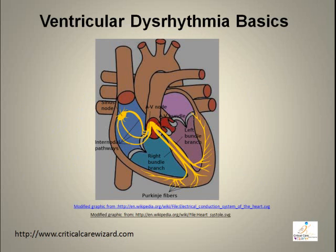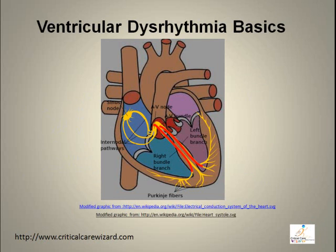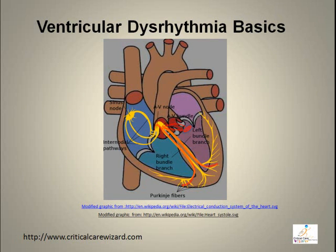In normal circumstances, heart conduction starts at the SA node that creates a pivot. As the conduction goes down to the ventricular muscles, it creates a QRS duration less than 0.10 seconds. If the heart conduction starts in the ventricles, it causes a significant conduction disturbance in the QRS complex.